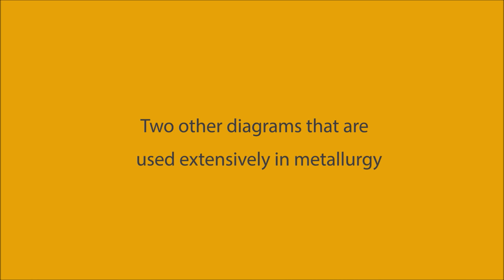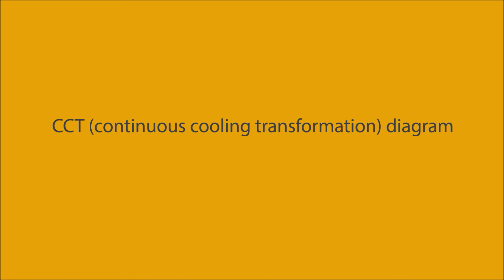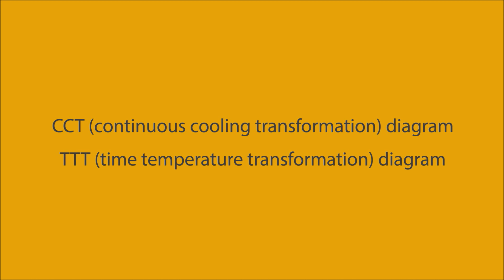In addition to the iron-carbon equilibrium diagram, there are two other diagrams used extensively in metallurgy: the CCT (continuous cooling transformation) diagram and the TTT (time-temperature transformation) diagram. These are briefly outlined in this module and will be covered in greater depth in a following module on heat treatment, where they are primarily used.